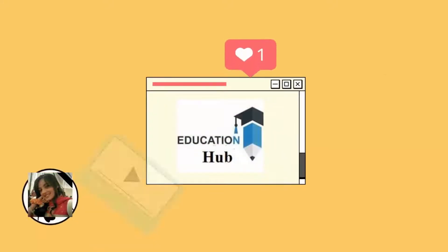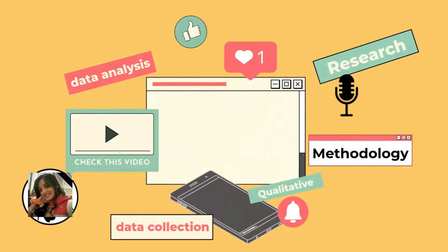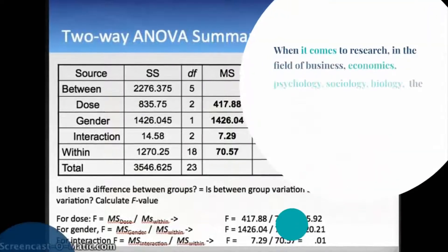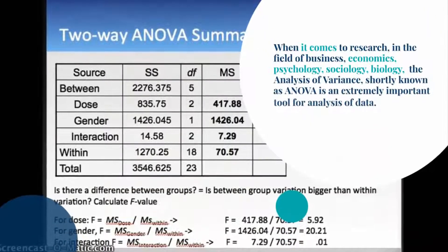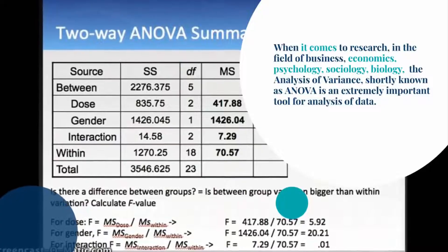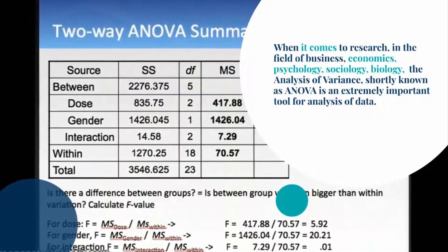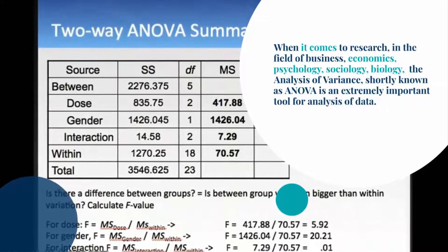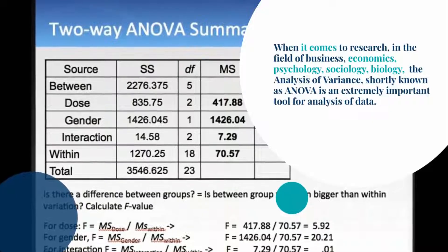Hi, I'm Aisha, and you are watching Educational Hub. When it comes to research in the field of business, economics, psychology, sociology, biology, etc., the analysis of variance — shortly known as ANOVA — is an extremely important tool for analysis of data.